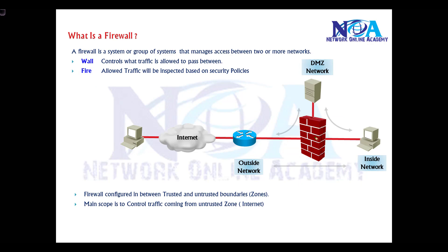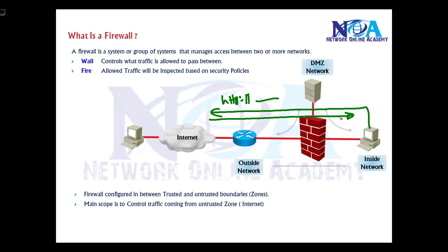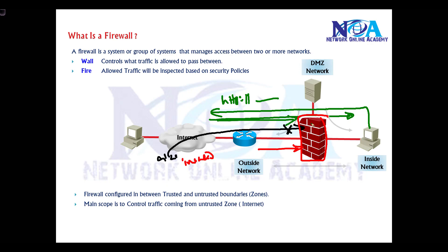All traffic is inspected — for example, a LAN user sending a request to an HTTP server like Google or Yahoo should be allowed, and return traffic should come back. But if an attacker tries to initiate traffic, it should be denied. There are two types of traffic coming from outside: one initiated by the attacker, and the other is return traffic. The firewall must have the capability to inspect which is return traffic and which is attacker-initiated, based on security policies.